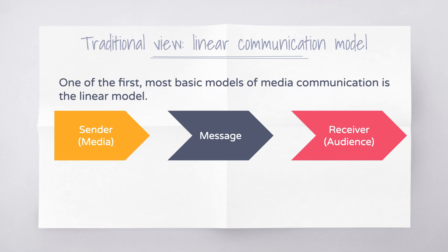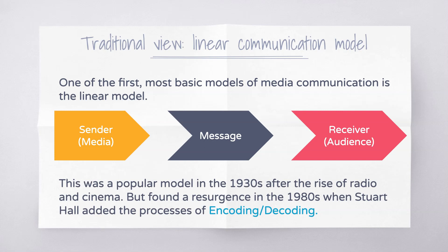For the media, the sender might be a newspaper, the message might be the article that they write, and the receiver would be the person who reads that newspaper article. This was a really popular model in the 1930s when media theories really began to ramp up as the rise of radio and cinema began to permeate throughout all of society. This model is associated with a popular theory of media influence called the hypodermic needle theory, or the bullet theory, which suggested that the receiver or the audience would absolutely accept all messages that are poured into them — that they were essentially an empty vessel that couldn't critically think about a message and would just accept what the media presented them.